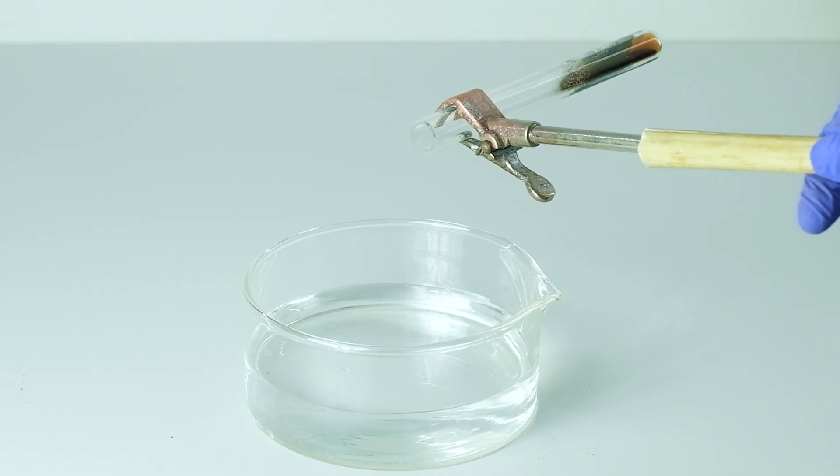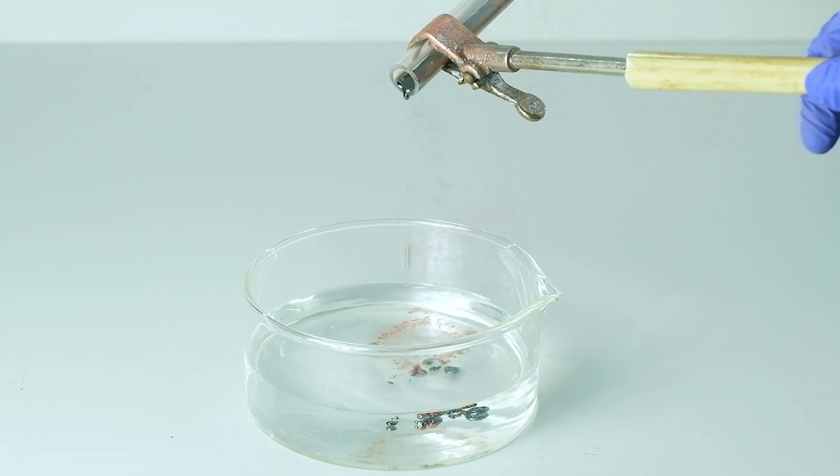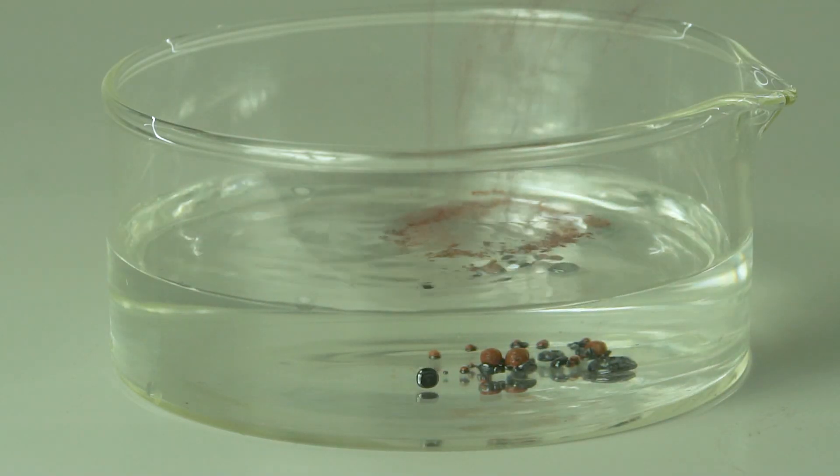Now, when molten selenium is poured in drops into cold water, you can see erythrocytes like granules of black selenium being formed.